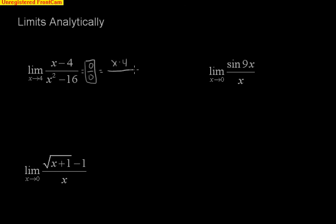If I take x minus 4 on the top and I know the bottom is x minus 4 and x plus 4 because it's a difference of squares, I know that the x minus 4 will cancel and I'll be left with 1 over x plus 4. And now I can do direct substitution by plugging in 4.